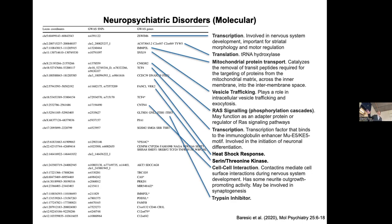But if you start going down the list, there's a mitochondrial transport protein involved, so metabolism seems to be involved. Vesicle trafficking, phosphorylation cascades, another transcription factor, a heat shock factor, a kinase, a cell-cell interaction protein, and a trypsin inhibitor. So this basically tells us nothing. If every gene is involved in schizophrenia, then nothing is involved in schizophrenia.